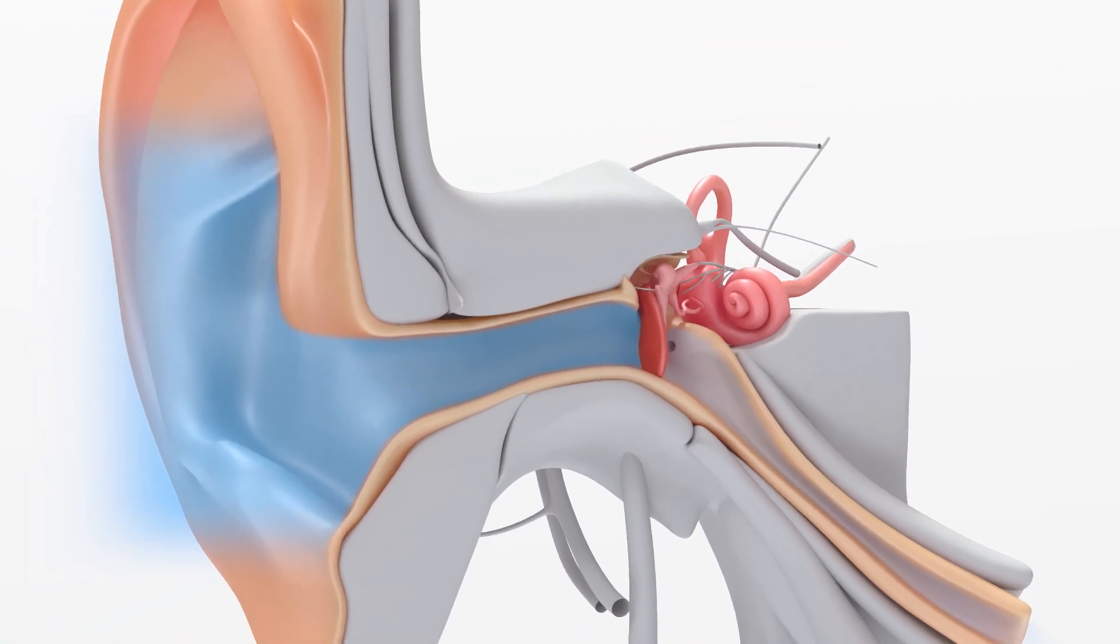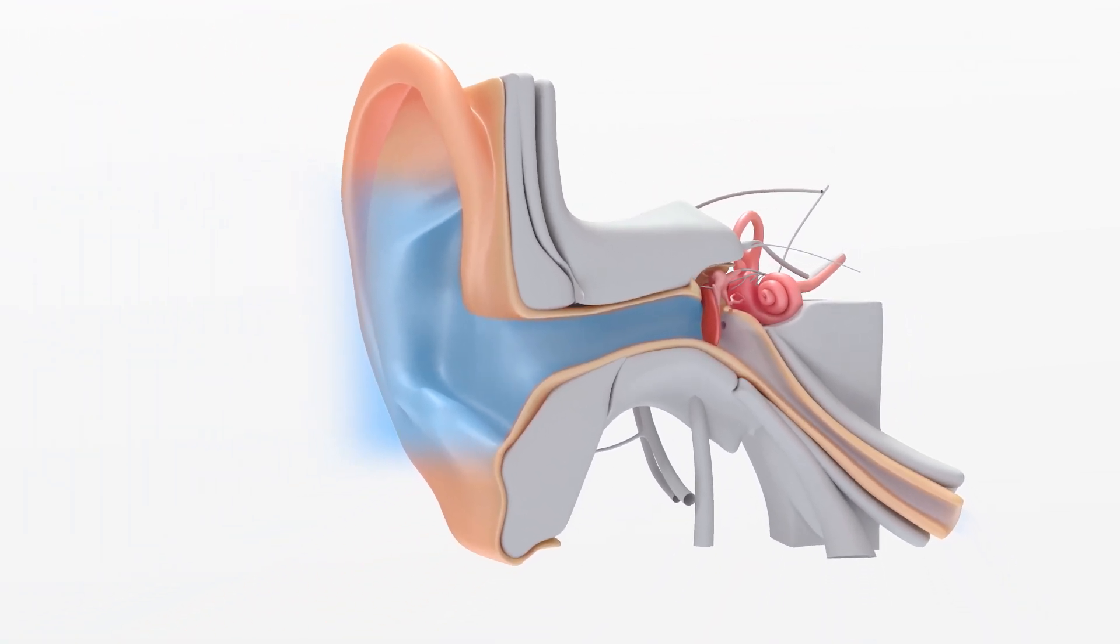The middle ear is normally filled with air and connected to the nose by the eustachian tube, allowing air to move into the middle ear to keep the same air pressure on both sides of the eardrum.